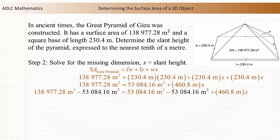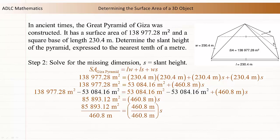Subtract 53,084.16 m² from both sides of the equation. You'll get 85,893.12 m² is equal to 460.8 m times S. Divide both sides of the equation by 460.8 m. The slant height will be 186.4 m.